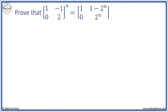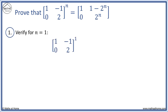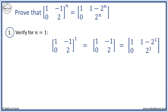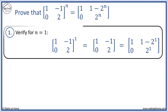For example, prove the following. Step 1 is to verify it works for n equals 1. We substitute n equals 1 into both sides of the equal sign. Raising the matrix to the power of 1 gives entries 1 minus 1, 0, and 2. This is the same as substituting n equals 1 into the right-hand side: 1 minus 2 to the power of 1 equals minus 1, 0 equals 0, and 2 to the power of 1 equals 2.